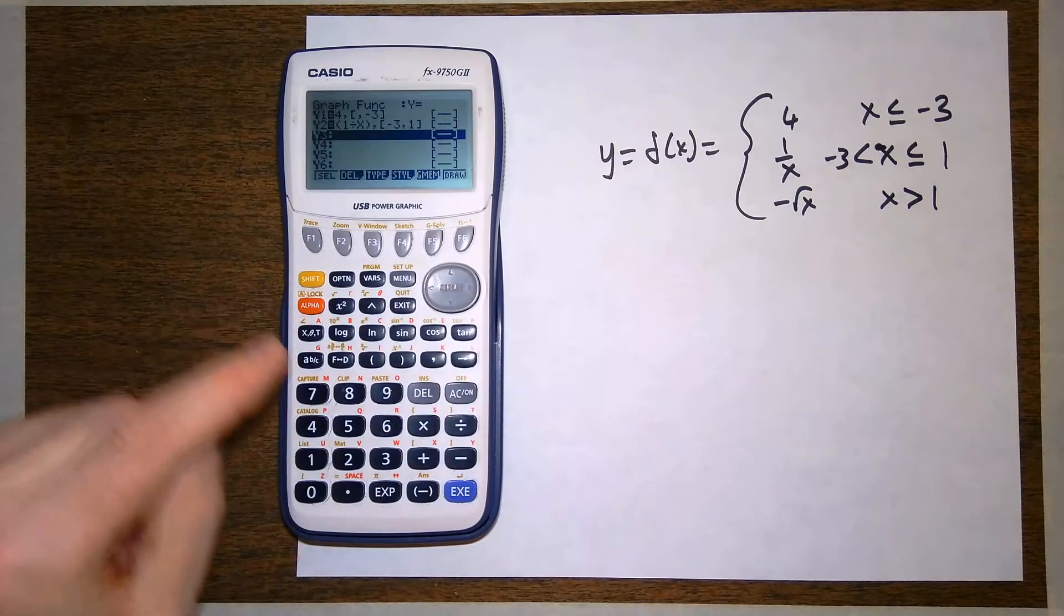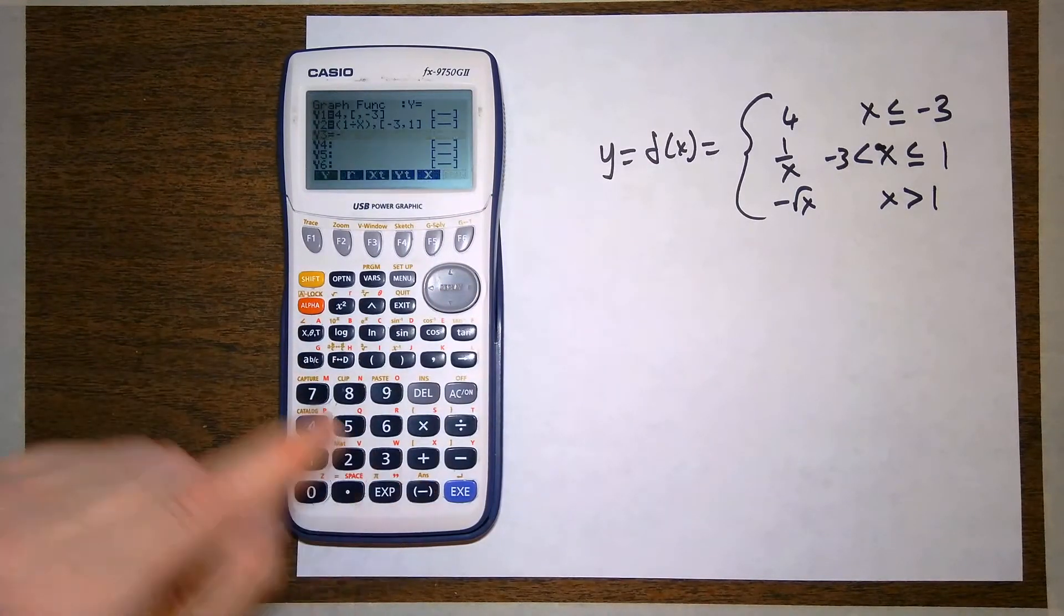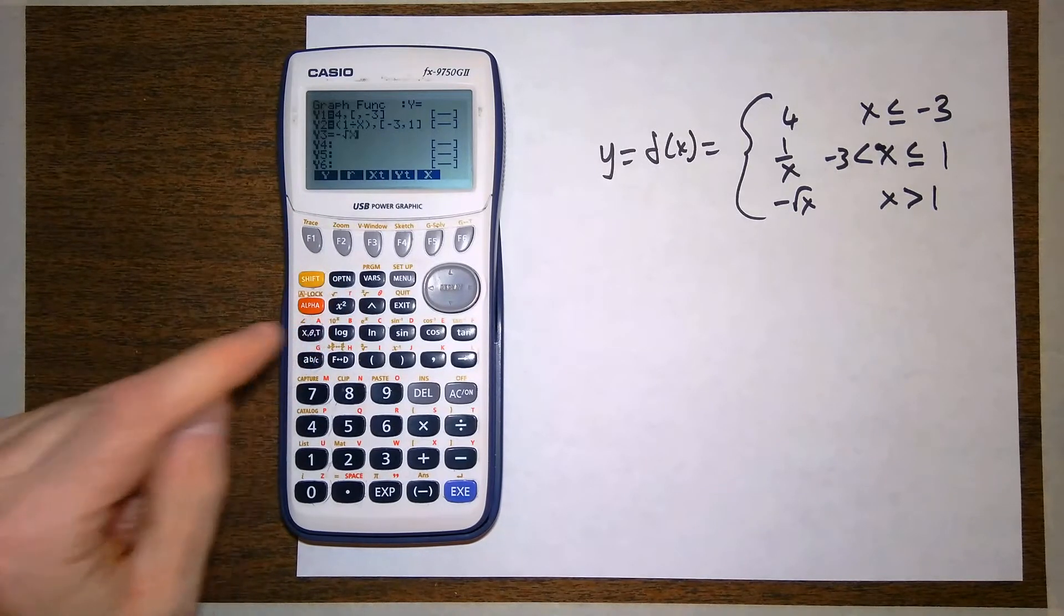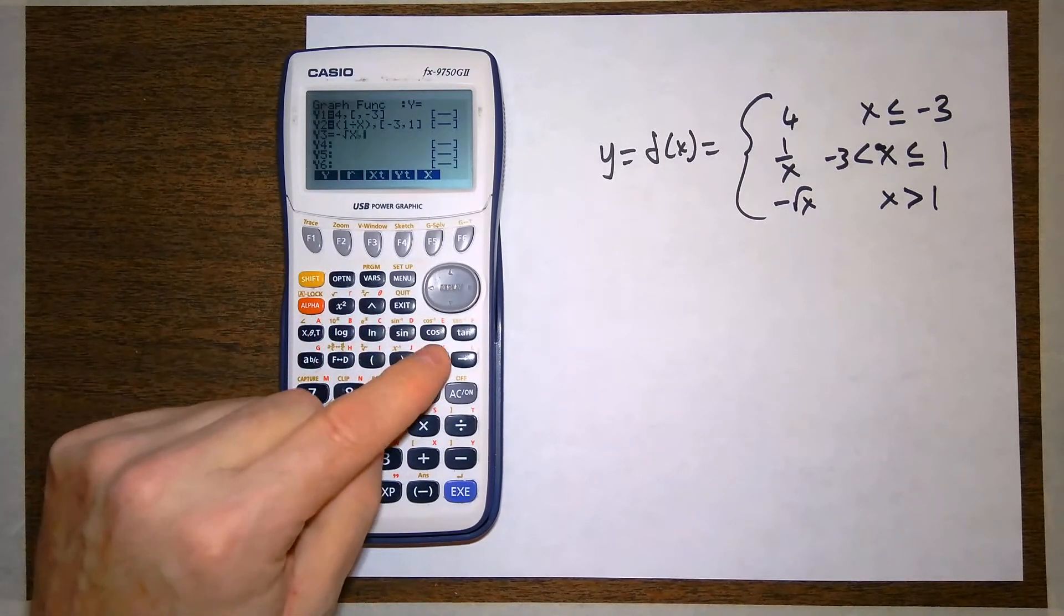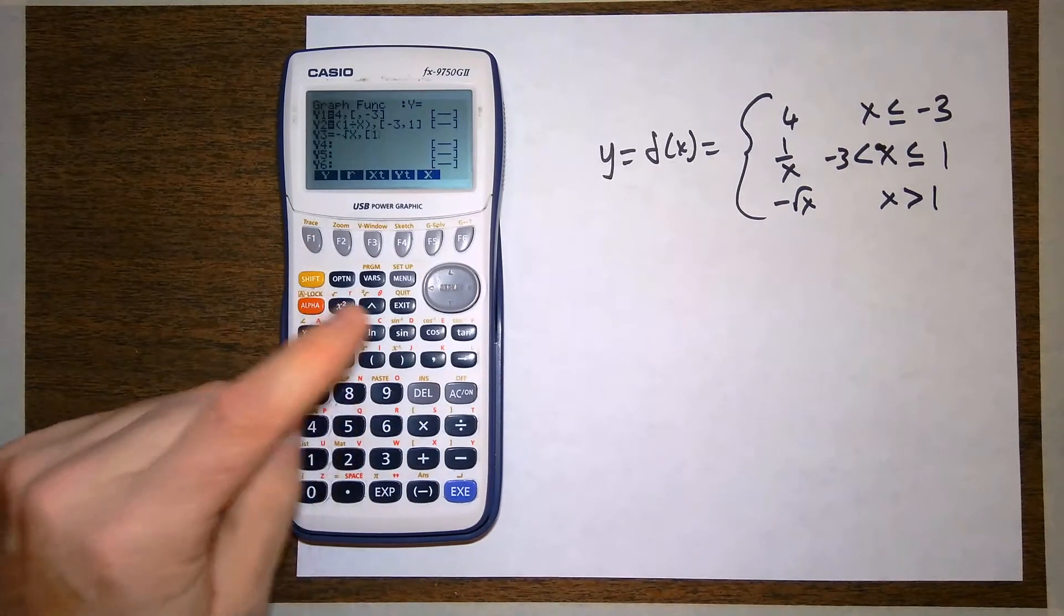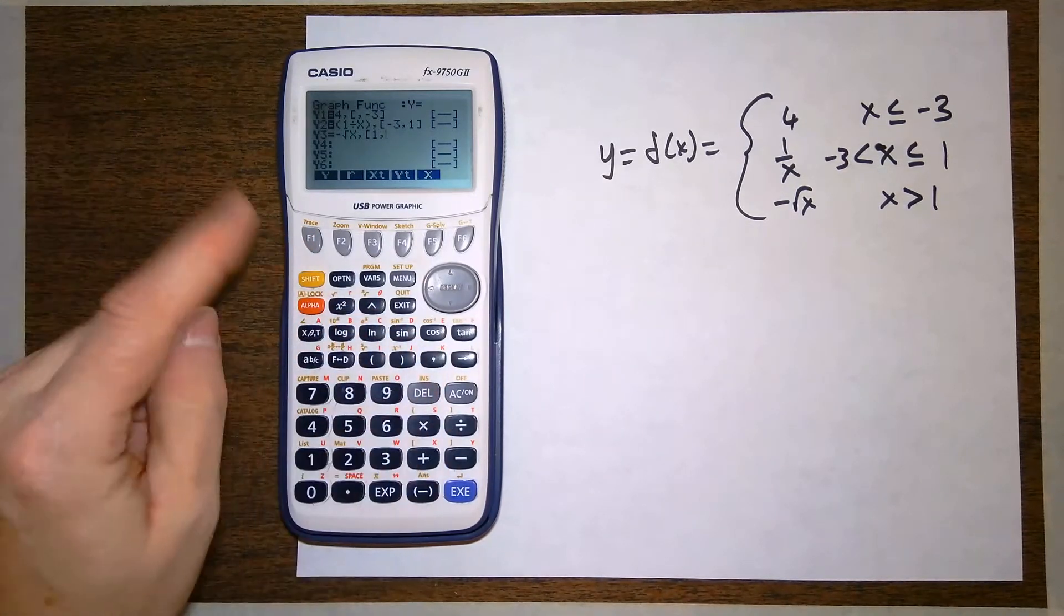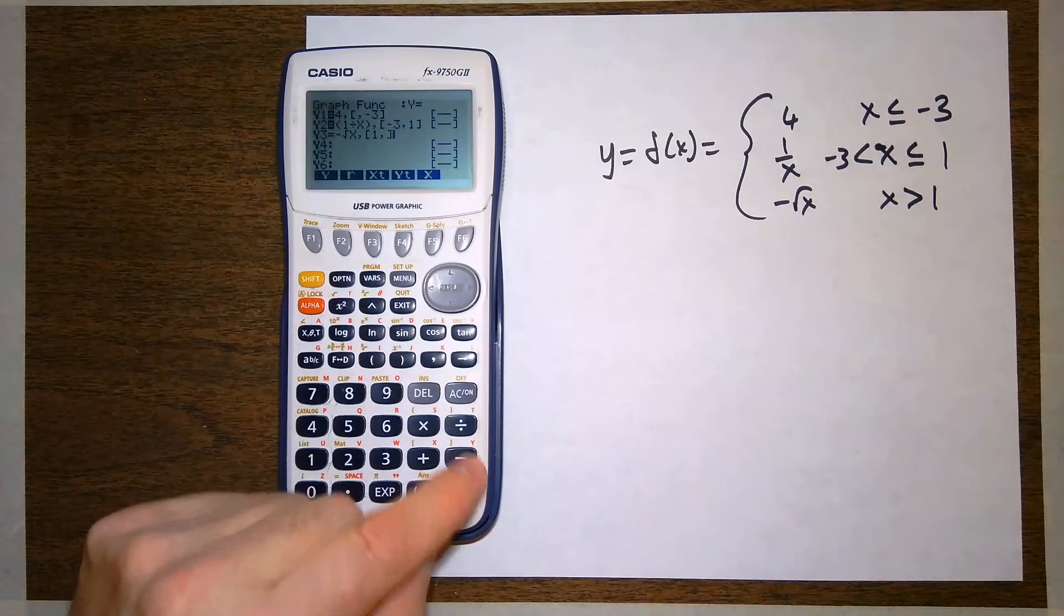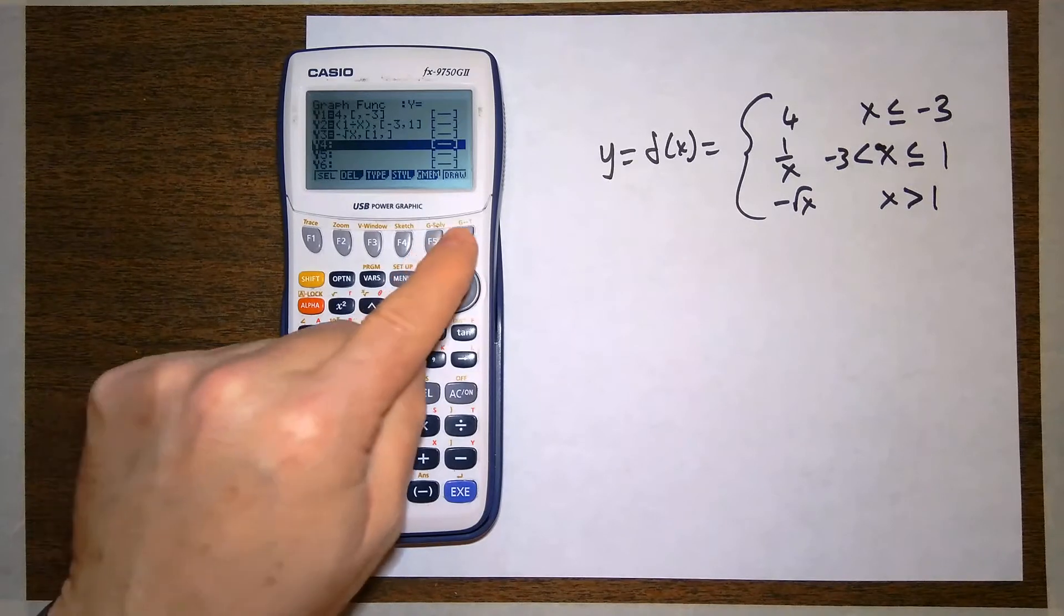And then the last piece is the negative square root of x. So negative and square root, shift x squared, plugging in my variable button, x, comma. Open my interval from 1, comma, to infinity. So I'm not going to put any ending number there. Shift minus is the bracket, hit enter, and then draw.